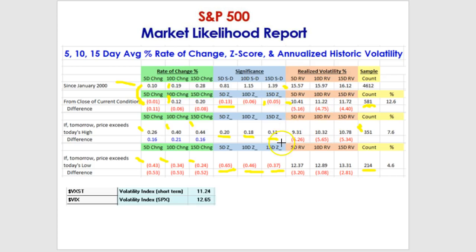When you break it out in terms of going above or below Friday's high or low, you can see values in the 9s and 10s if the market goes up, and if it goes down below the low, you're looking at something in the 12s or 13s — much lower realized volatility than the benchmark of 15%.